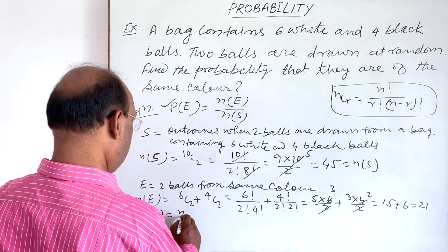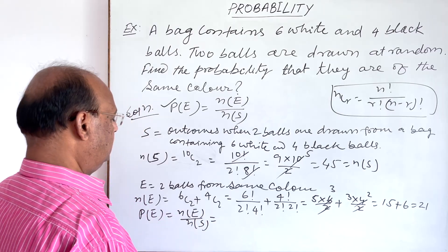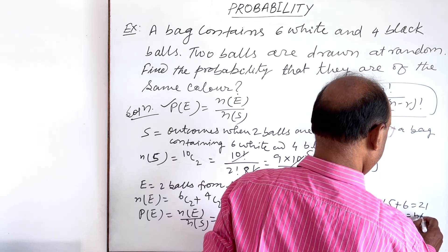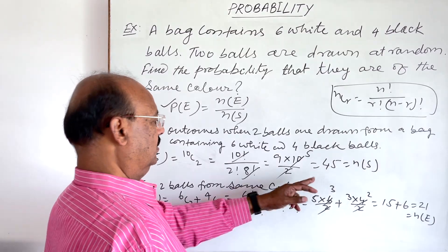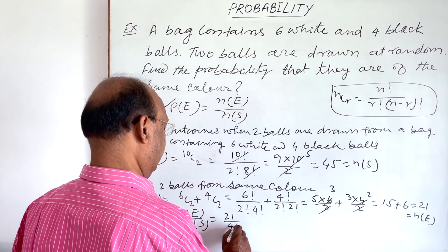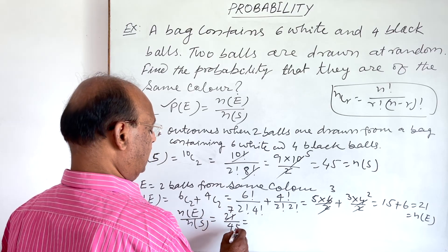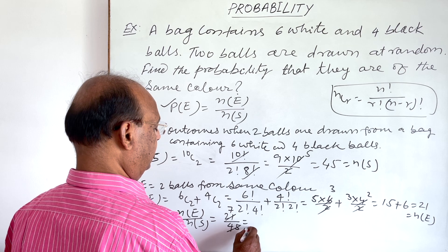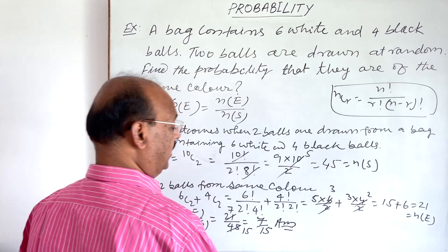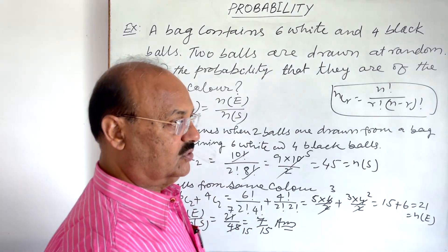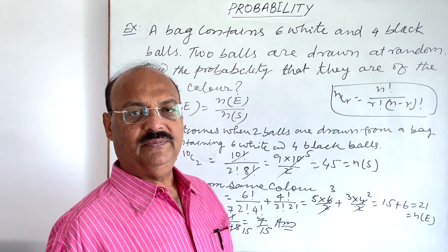Using this formula, n(E) divided by n(S). n(E) is 21 and n(S) is 45. So we can cancel out with three here. This is 7 by 15. So 7/15 is the required answer. This is the probability when two drawn balls are from the same color, both are from white or both are from black.